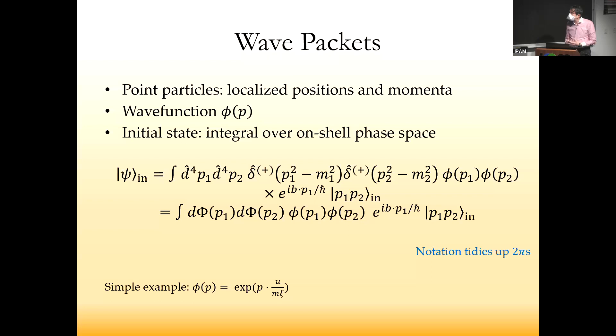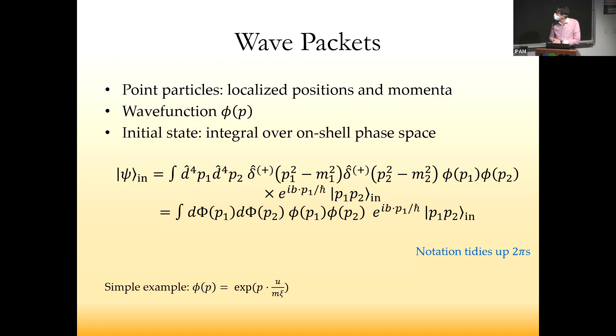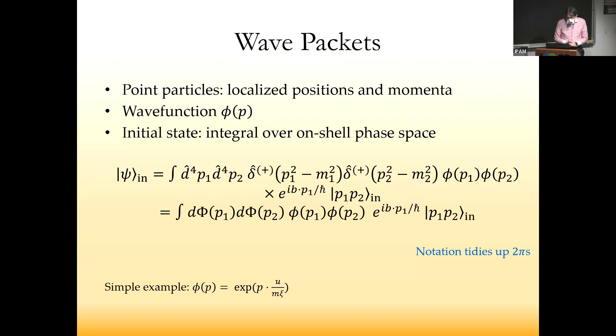We have an integral over on-shell phase space. There are two wave functions for the incoming particles and a phase factor which encodes the impact parameter. This is a superposition of plane wave states, and we can abbreviate it by hiding two pis inside hats. A very simple example of a wave function is an exponential. This thing is actually bounded everywhere for massive particles, and the little c encodes the ℏ inside it—it's a ratio of Compton wavelengths to packet size.